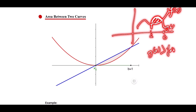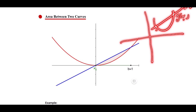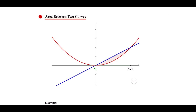So the area will be the integral from a to b of g(x) minus f(x) — the upper one minus the lower one. Another example: if f(x) is the upper curve and g(x) is the lower one, then the integral of the area from a to b will be f(x) minus g(x), because f(x) is greater than g(x).